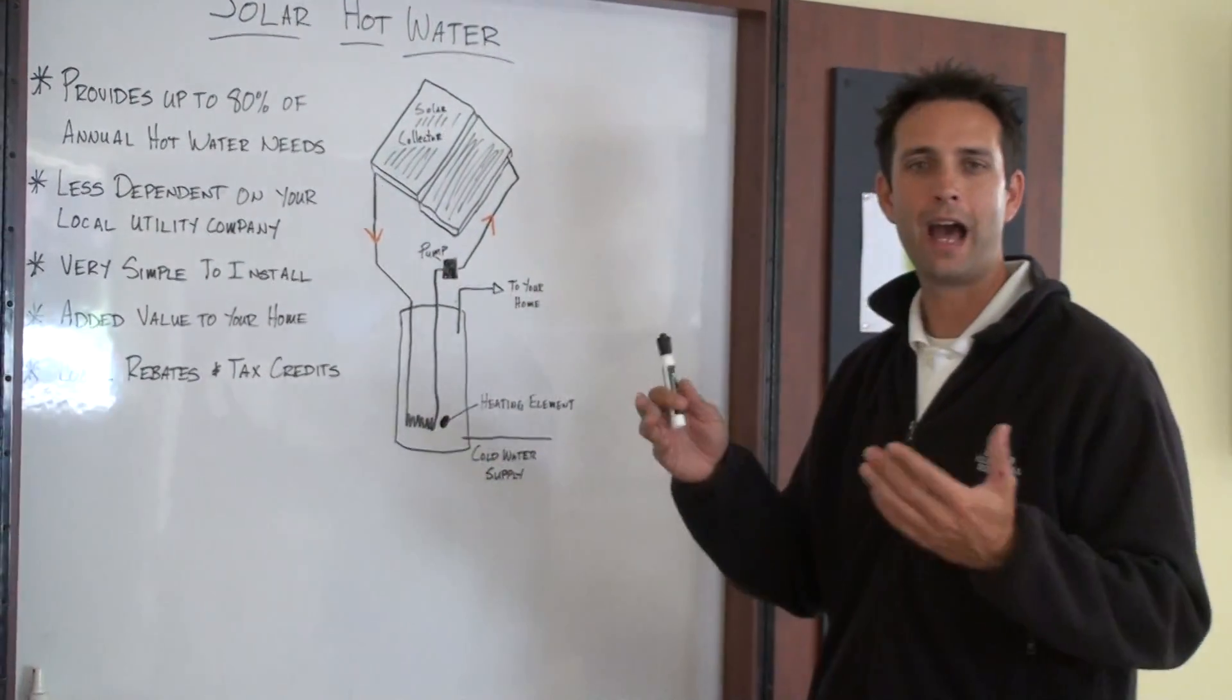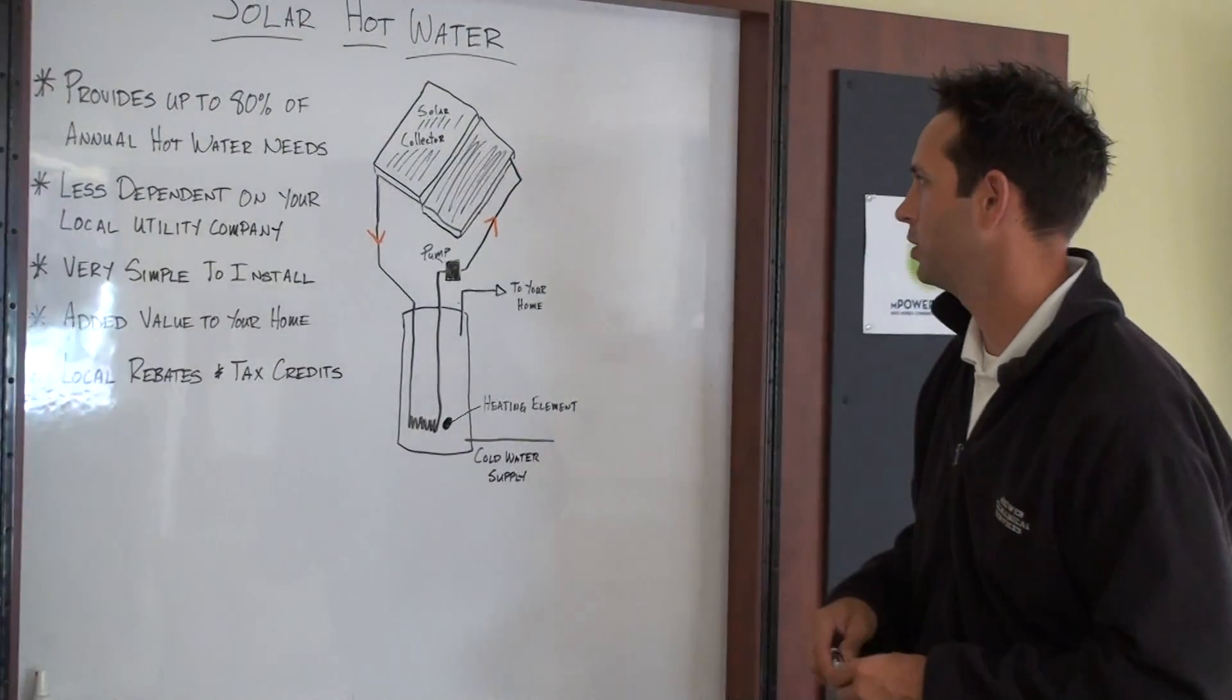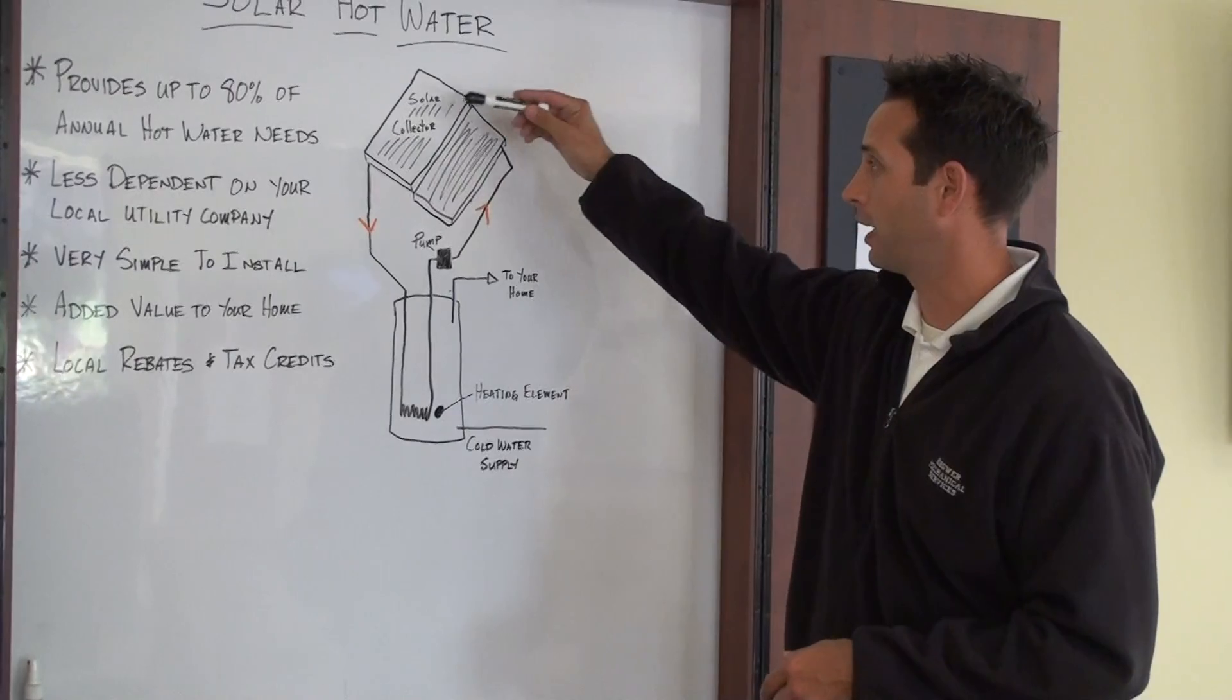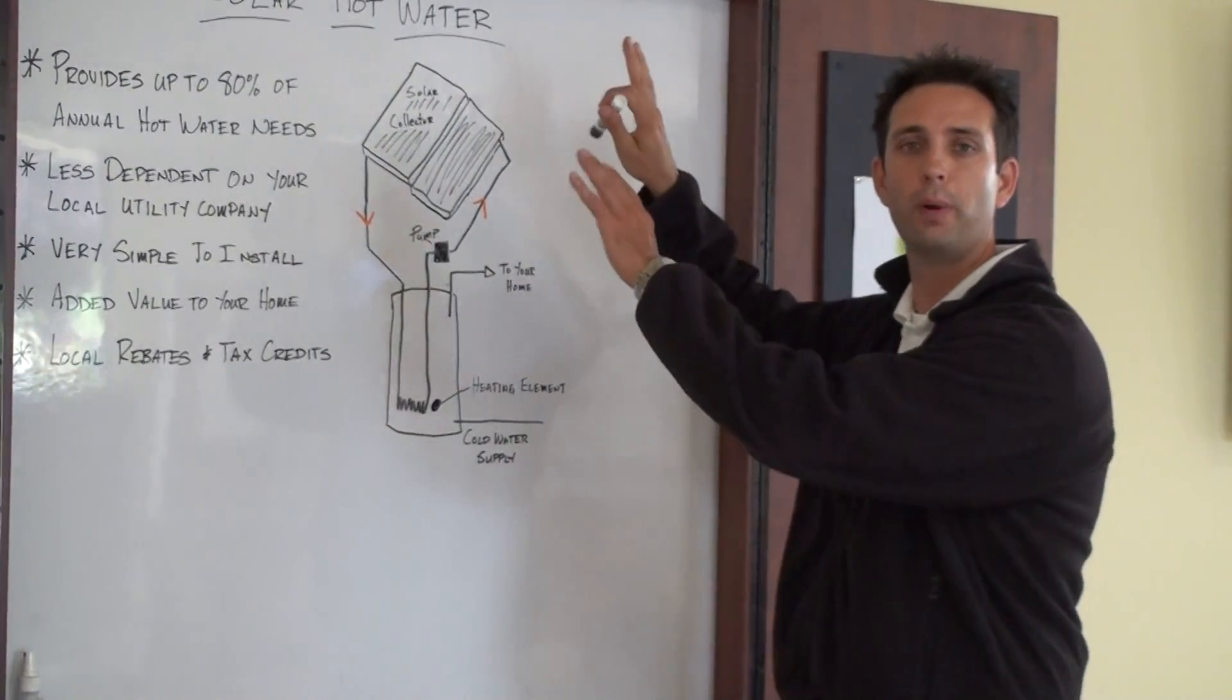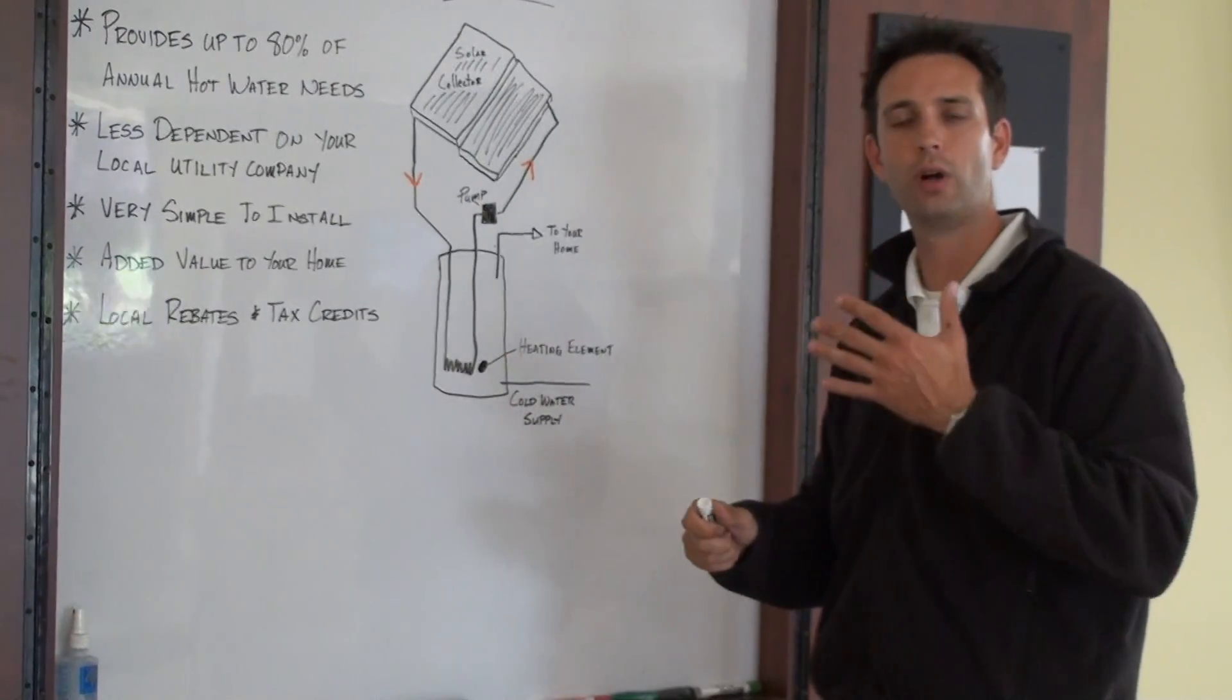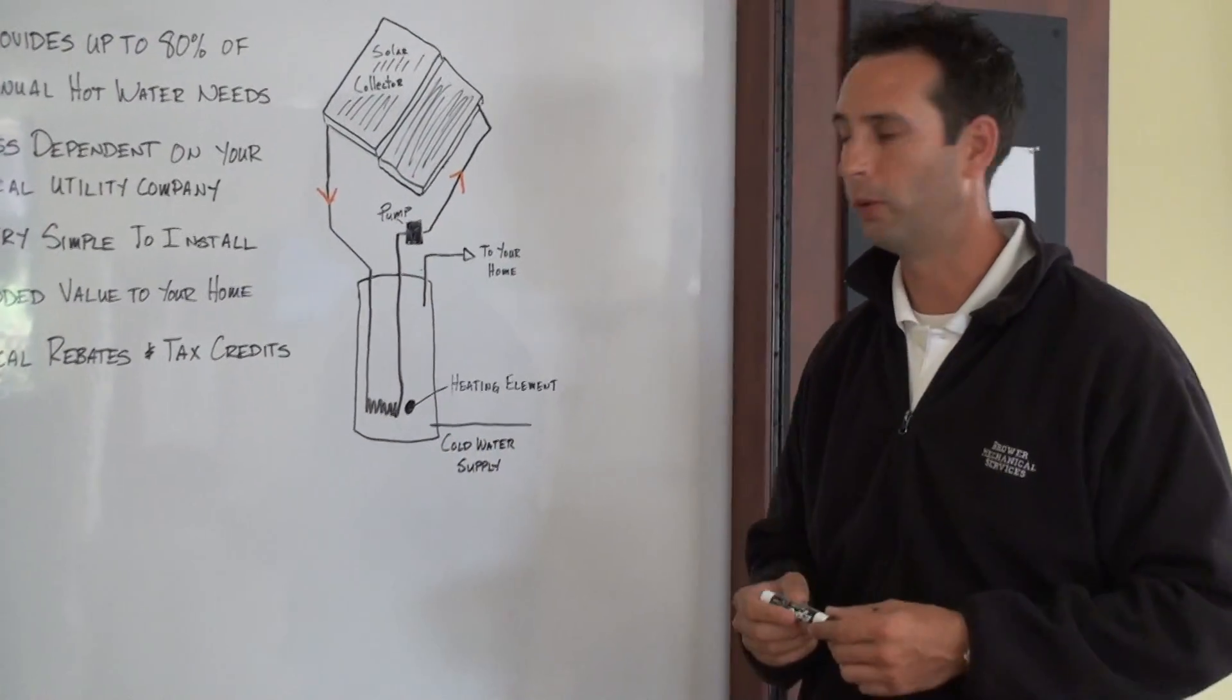So let me talk a little bit about how does it work? How does the system actually work? So like I said, it's a pretty easy concept. You have what we call our solar collector or solar panel that goes up on your roof. And then you have what's called a storage tank. Now the storage tank is what provides the actual hot water that goes into our home.